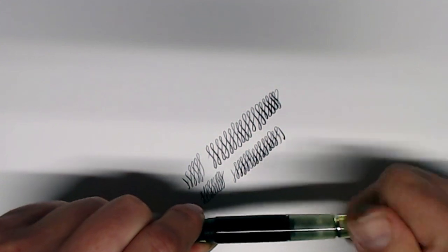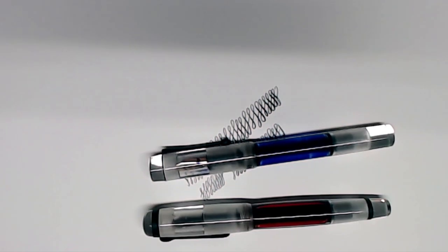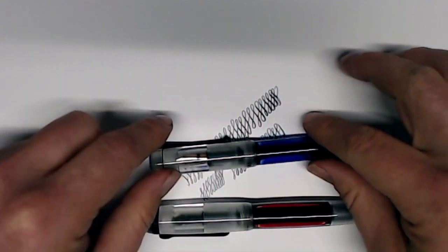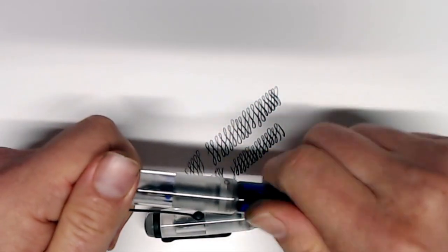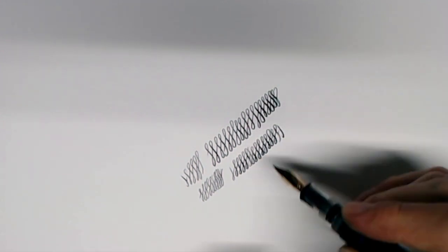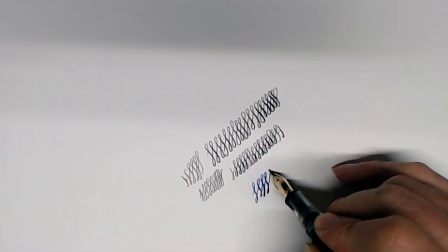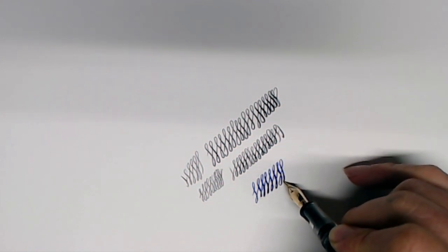So this is the Opus 88 demonstrator, and this is the Opus 88 Omar Clear. And both of them are fitted with flex nibs. So this is a 14 karat gold Yovo nib with semi-flex customization from a company called FB Nibs.